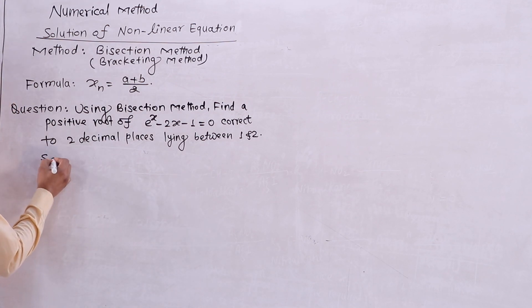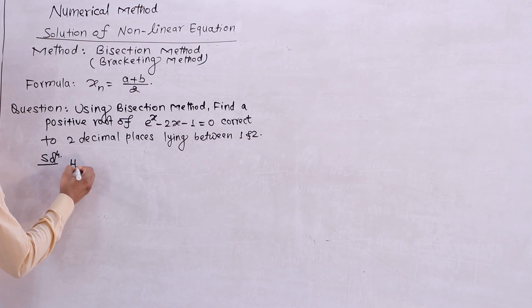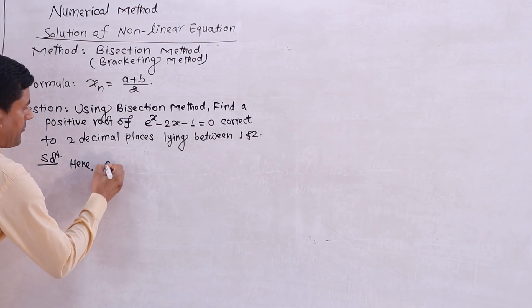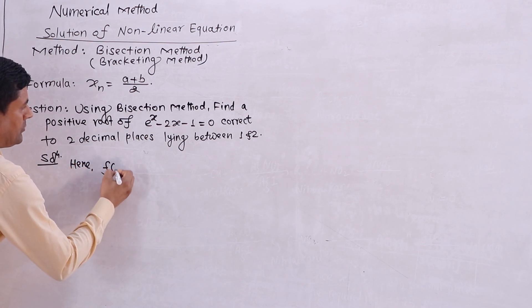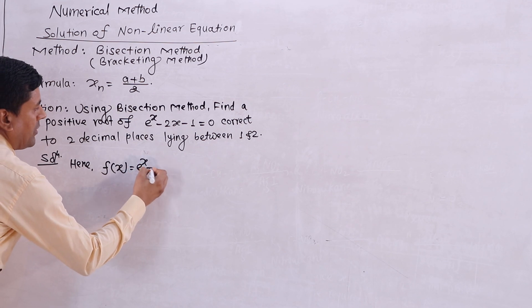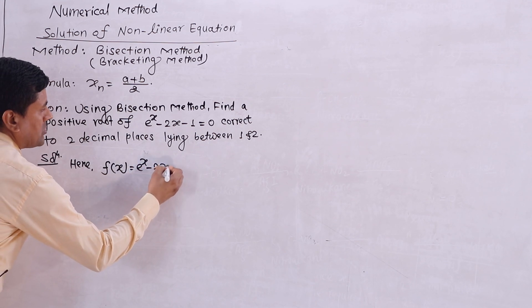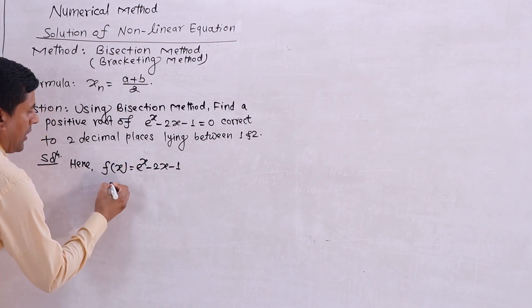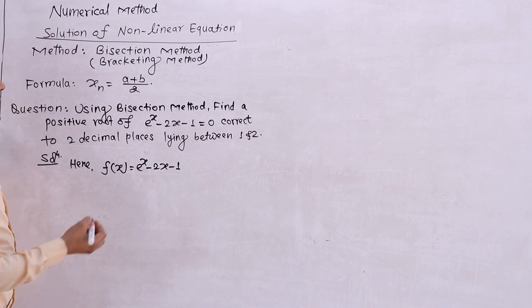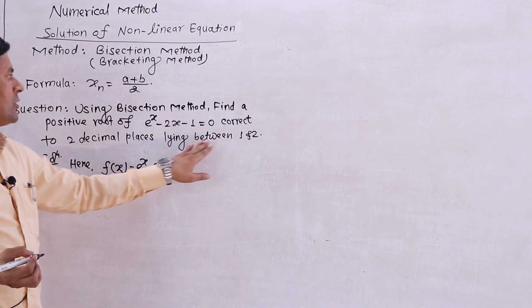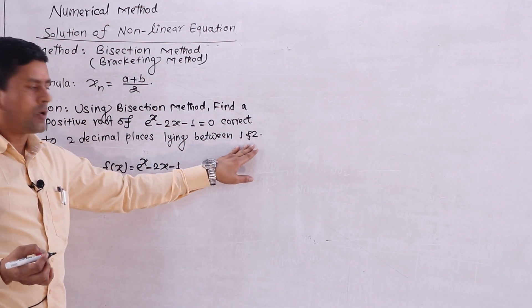I will solve it. The given equation is f(x) = e to the power x minus 2x minus 1.